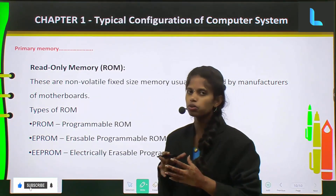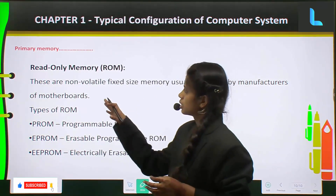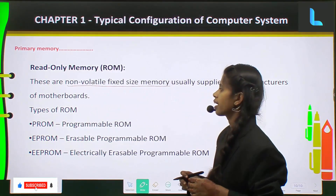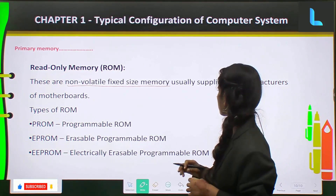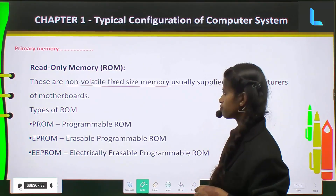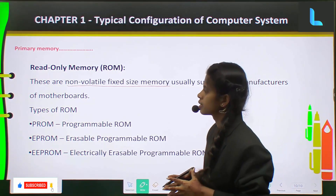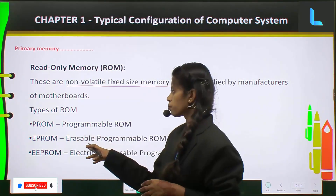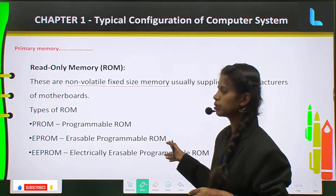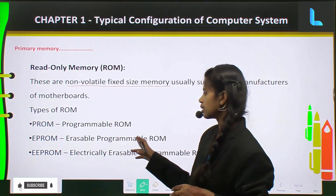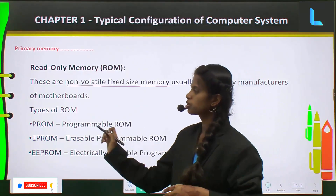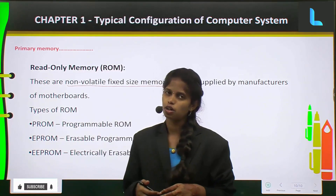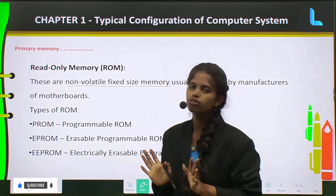Next comes Read Only Memory. These are non-volatile, fixed-sized memory units usually supplied by manufacturers of the motherboards. The types of ROM are: Programmable ROM (PROM), Erasable Programmable ROM (EPROM), and Electrically Erasable Programmable ROM (EEPROM). These are the types of ROMs.